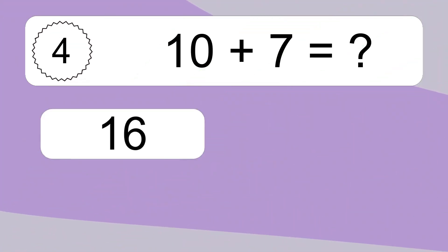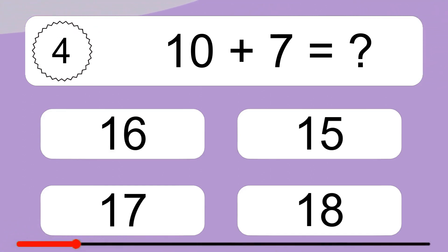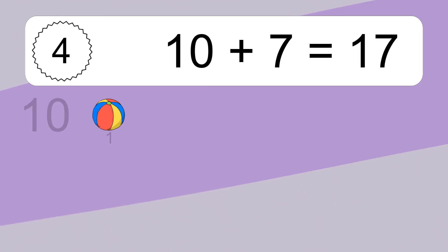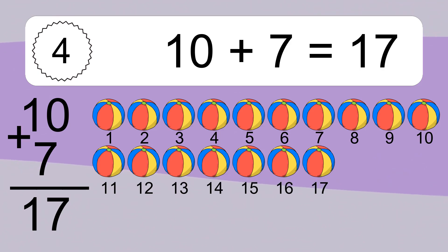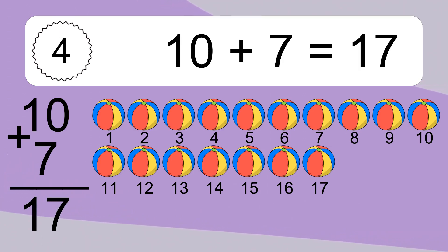Ten plus seven equals what? Ten plus seven equals seventeen. Let's count it: one, two, three, four, five, six, seven, eight, nine, ten, eleven, twelve, thirteen, fourteen, fifteen, sixteen, seventeen.